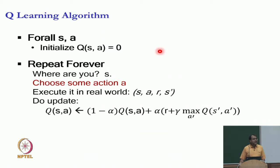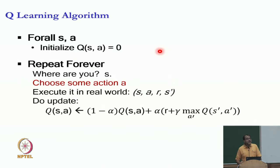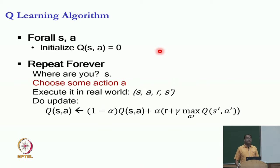This S, A, R, S-prime is your sample. We execute A in state S, reach S-prime, and get immediate reward R. Now I need to back up this information to improve my value estimate. My initial value estimate was Q(S,A) and my new value estimate is R plus gamma times V(S-prime). But we don't maintain V(S-prime) explicitly, so we use max over all A-prime of Q(S-prime, A-prime), which is the equivalent formulation.